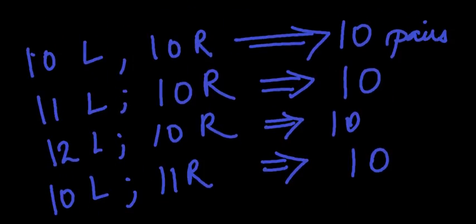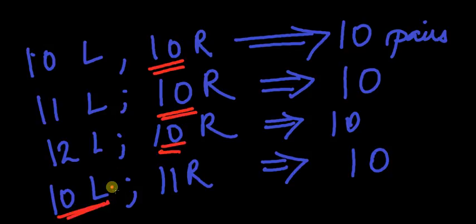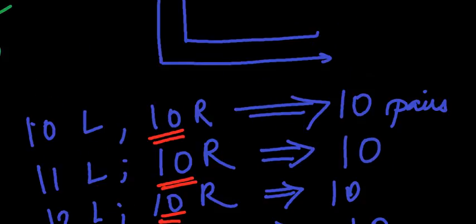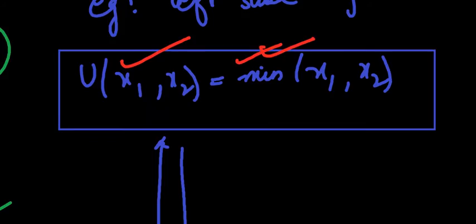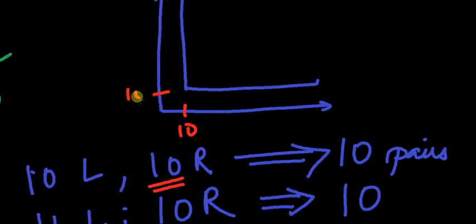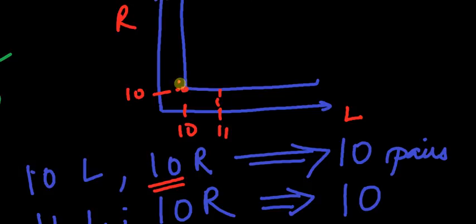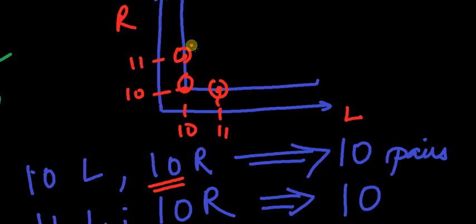Whatever is the minimum determines the number of pairs I can make — here it is 10 in all cases. So utility depends on whichever quantity is the minimum. Whether I have 10 of each, or 11 left and 10 right, or 10 left and 11 right — taking right shoe on the y-axis — all these points give the same utility of 10 pairs. This is the L-shaped form of the indifference curve.